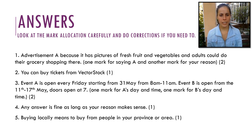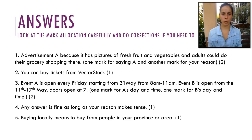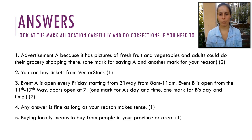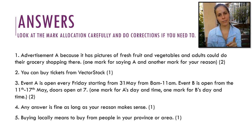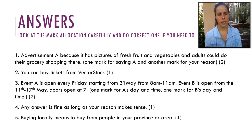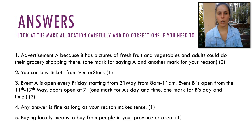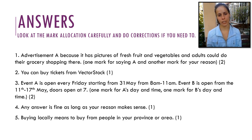Number one, your answer is Advertisement A. We were talking about which one appeals more to adults. I said Advertisement A because it has a picture of fresh fruits and vegetables and adults can do their grocery shopping there. You get one mark for saying Advertisement A and another mark for telling me your reason — that is two marks. Number two, you can buy tickets from Vector Stock — one mark. If you just said Vector Stock, it's wrong — it's not a full sentence.